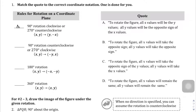The rules for rotation on a coordinate plane: 90 degrees clockwise or 270 degrees counterclockwise. Some of you might be confused why they're putting two of these. It's because if you're starting in quadrant one and you go 90 degrees clockwise you'll end up in the same place as if you go 270 degrees counterclockwise, so it can be either one.